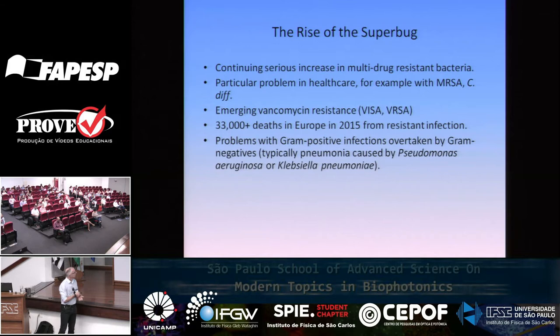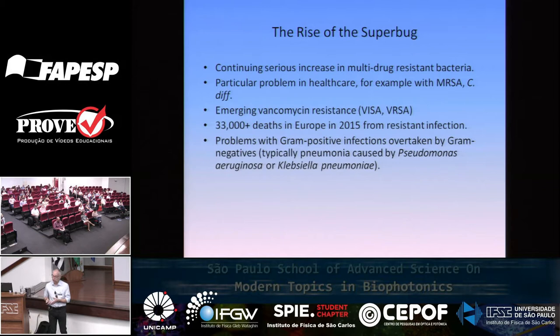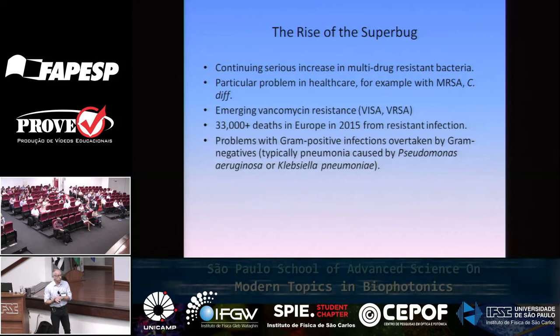Until perhaps 10 years ago, there was a huge problem in hospitals, certainly in Europe and the States, with organisms like MRSA — methicillin-resistant Staphylococcus aureus — a standard gram-positive bacterium with several extra resistance mechanisms. Another problematic organism was Clostridium difficile. Both are resistant to a great deal of different antibacterial agents.